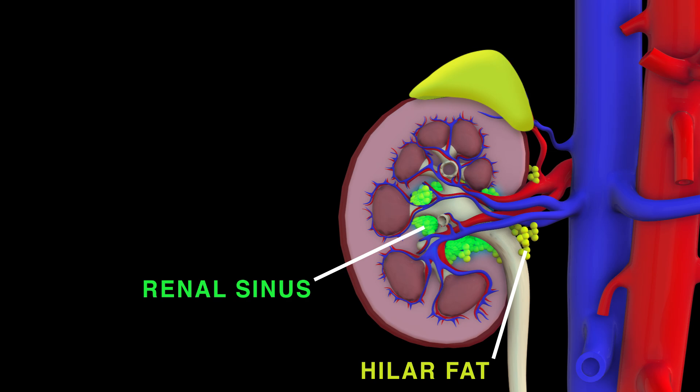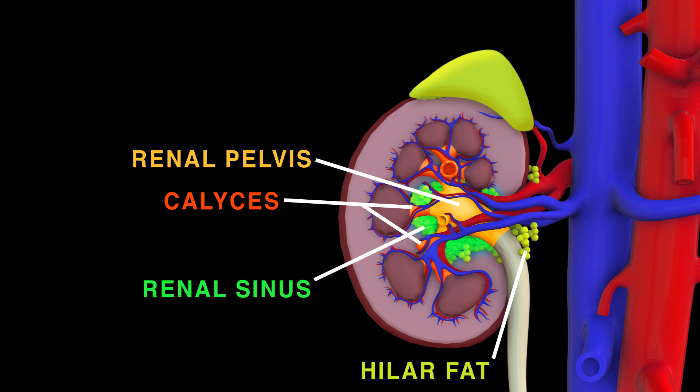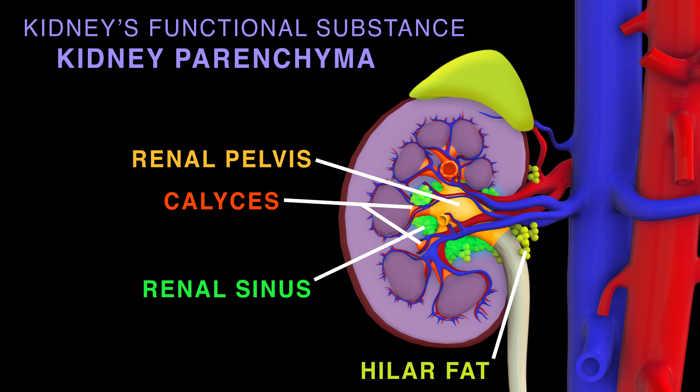The renal sinus contains the renal pelvis and calyces, and separates the renal medullary tissues from these. The kidney's functional substance is the kidney's parenchyma, made up of the renal cortex and the renal medulla.